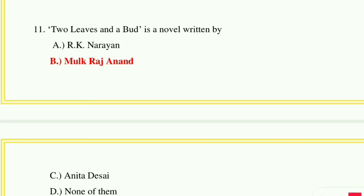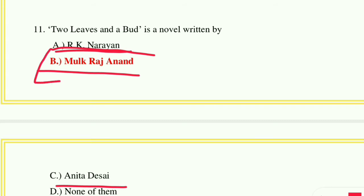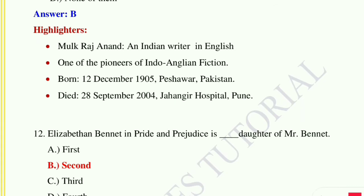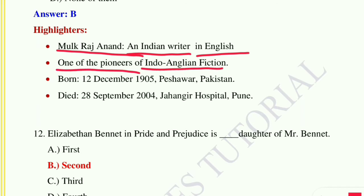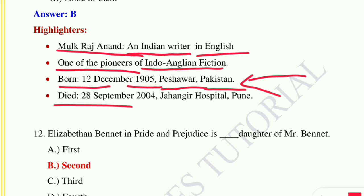Question number eleven: 'Two Leaves and a Bud' is a novel by — option A: R.K. Narayan, option B: Mulk Raj Anand, option C: Anita Desai, option D: none of them. The answer is option B, Mulk Raj Anand. Mulk Raj Anand is an Indian writer in English and one of the pioneers of Indo-Anglian fiction. He was born on 12th December 1905 at Peshawar, Pakistan, and died on 28th September 2004 at Jahangir Hospital, Pune.